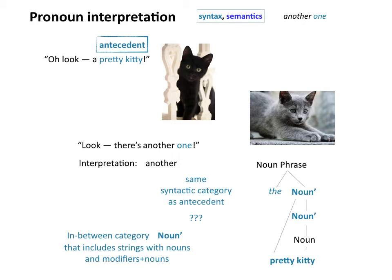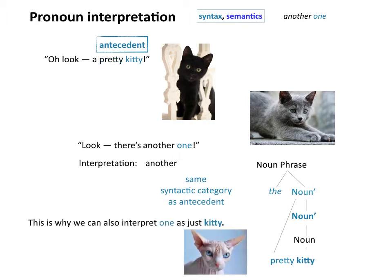Syntacticians once upon a time gave this the title 'noun bar,' indicated with a noun prime — N'. Noun bar includes strings that have just nouns in them as well as nouns with modifiers; 'pretty' is a modifier for 'kitty,' so 'pretty kitty' is a noun bar. Notably, plain nouns are also lumped into this category, so 'kitty' is itself a noun bar in addition to being a noun — that's why you see that structure there. That's why the argument goes that we can interpret 'one' both as 'kitty' and also as 'pretty kitty.'